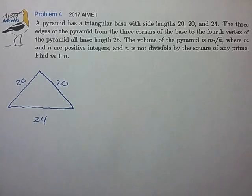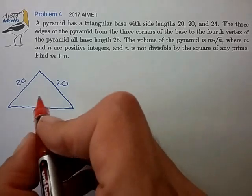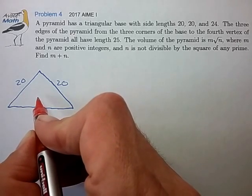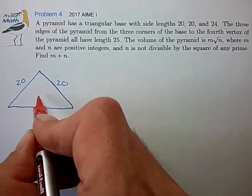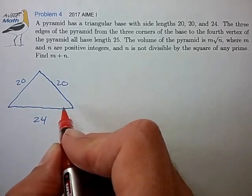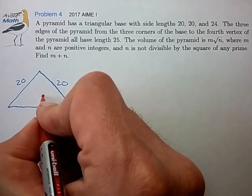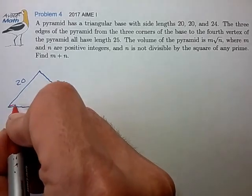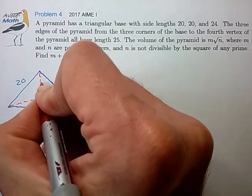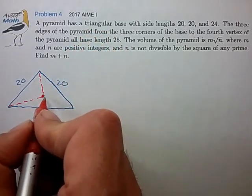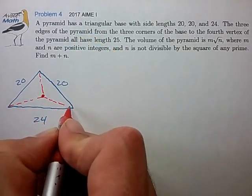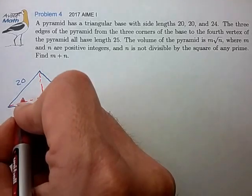And it looks like the fourth vertex lies above this base, and all the edges are of length 25. So let me just draw that a little off-center so I can get a little perspective on this. So all these dotted line edges that rise to the vertex above the plane are of length 25.